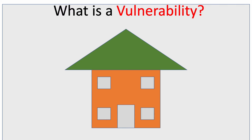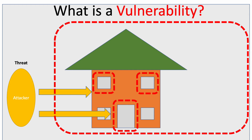We have a house with some windows and some doors, and we have our attacker — the threat that's on the house. Let's say the house was built and the windows and the doors didn't actually have locks on them. So our attacker could come in. Either the manufacturer built the house without locks, we built it and forgot to put the locks in, or the actual builder forgot to put the locks in.